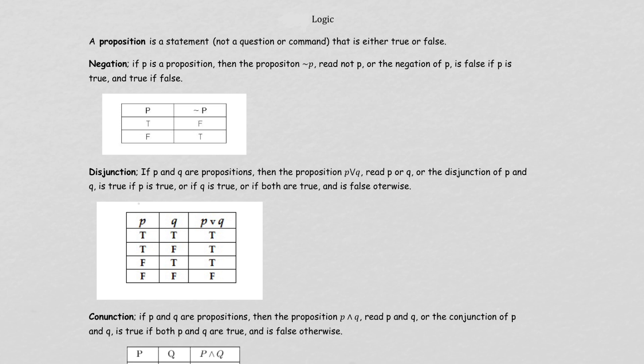We have disjunctions. Disjunctions use the word 'or.' This is the sign. So if we have two statements P and Q and have a disjunction between them, it will be true in all cases except when both the P statement and the Q statement are false.